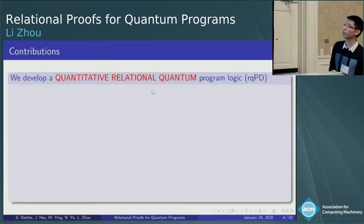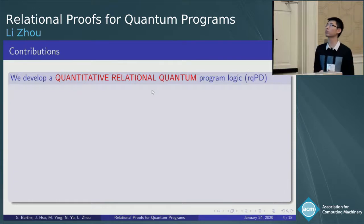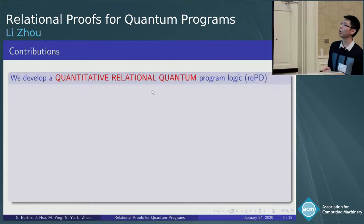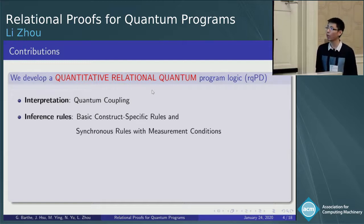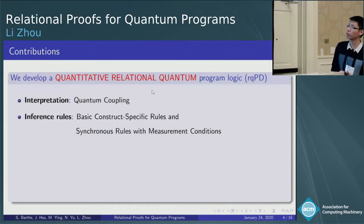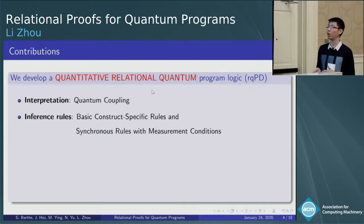In this work, we develop a quantitative relational quantum program logic called RQPD. In detail, we use quantum coupling, an analog of probabilistic coupling, to interpret the judgment as it can capture the properties of interest. We also define a set of useful inference rules, including the basic construct-specific rules and synchronous rules with measurement conditions. I will explain this later.